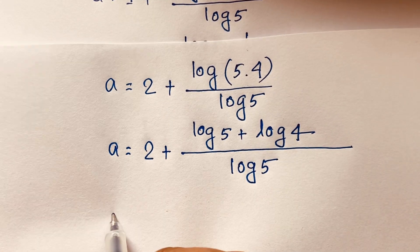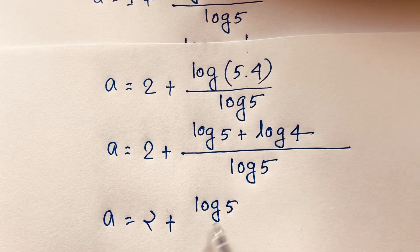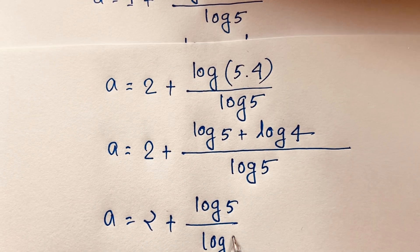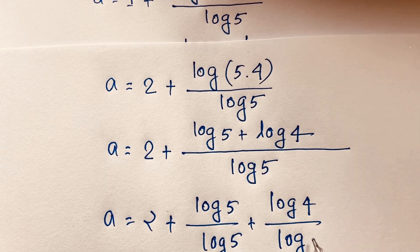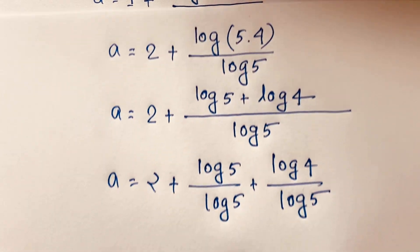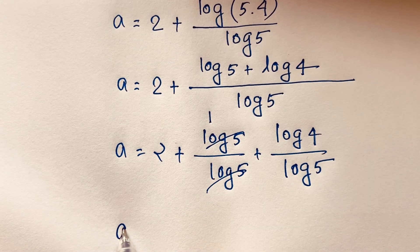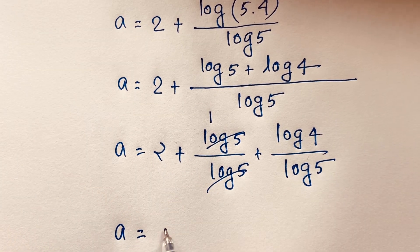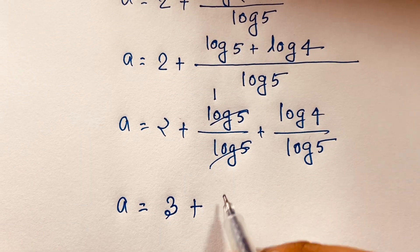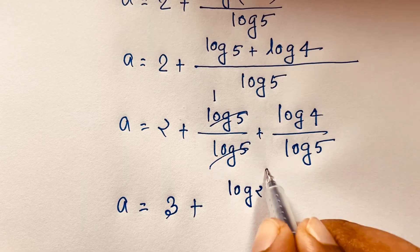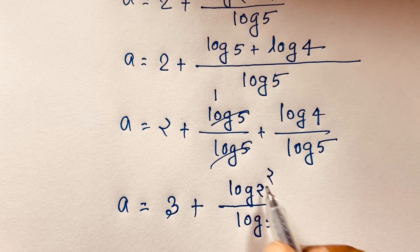I separate the fraction again. It becomes a is equal to 2 plus log 5 over log 5 plus log 4 over log 5. The log 5 over log 5 cancels out to 1, so a is equal to 2 plus 1, which is 3, plus log 4 over log 5. Now log 4 equals log(2²).